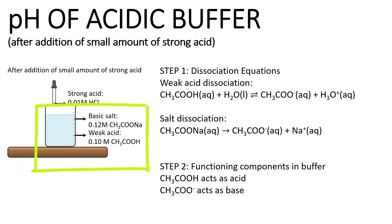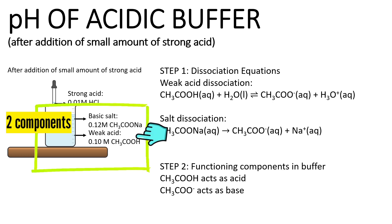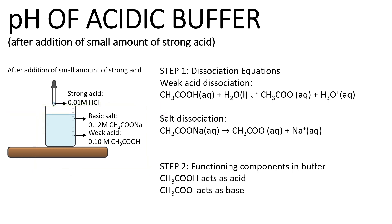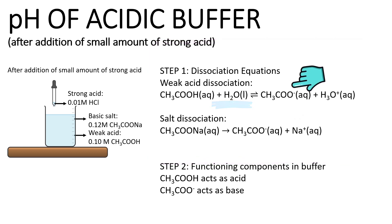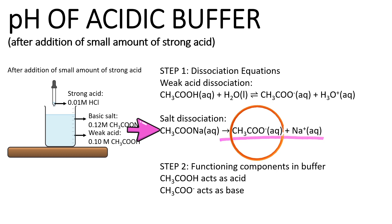In the acetic acid–sodium acetate buffer system, there are two components: the first is the weak acid, acetic acid (CH3COOH), and the second is the basic salt, sodium acetate. The weak acid dissociates in water to give the conjugate base and hydronium ion. Sodium acetate, the basic salt, dissociates completely to give the cation and the anion CH3COO⁻, which is the same as the conjugate base of the weak acid.